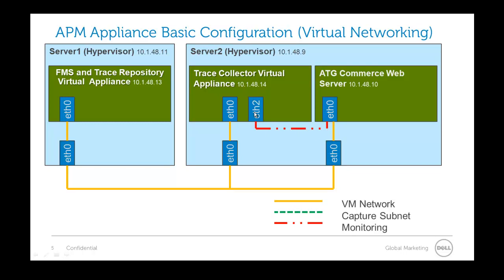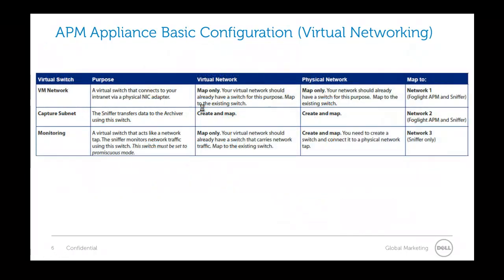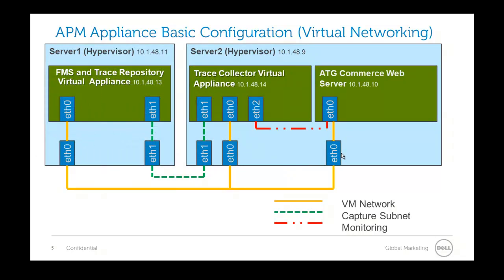That's basically how network sniffing works. The third thing we'll do is set up a third network that's directly connected, so the trace collector can send all its information back to the trace repository. We don't want to send this back over your open network, because that would double your network traffic. So we put a wire on a physical port and map the two virtual ports together. The guide will explain each of these networks: the VM network, the capture subnet, and monitoring.